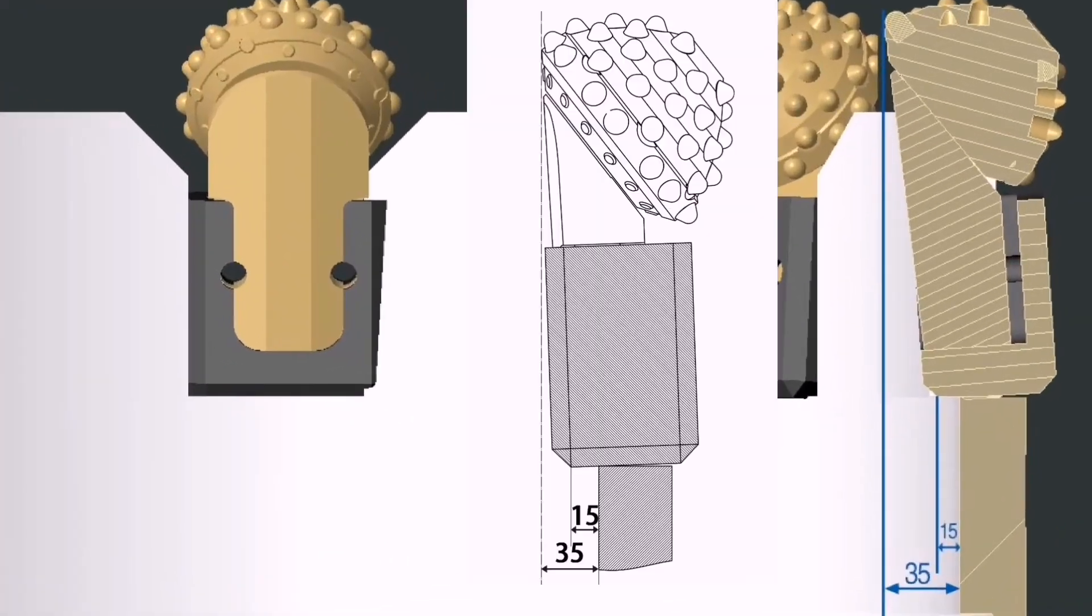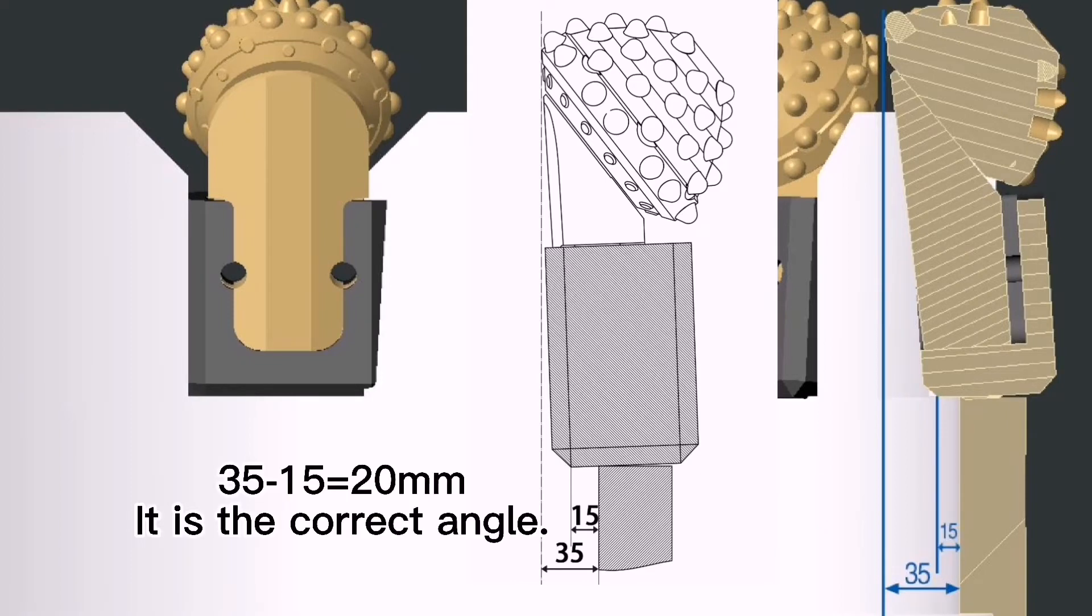For inner roller cone beads, the horizontal distance between cone edge and bottom is also 20mm. The angle is correct in this position.